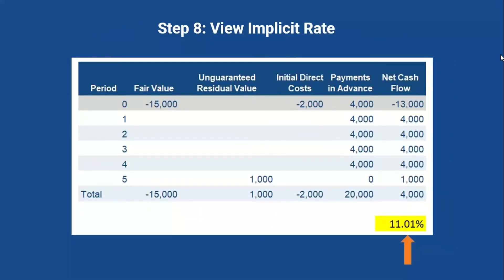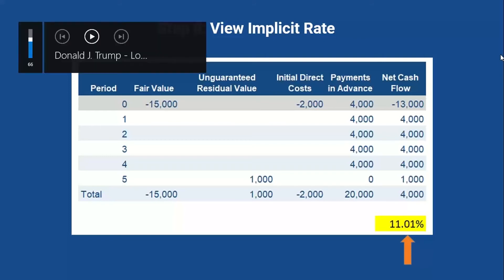That implicit rate comes out to 11.01%. This 11.01% is the IRR and also the implicit rate based on the information in our lease.